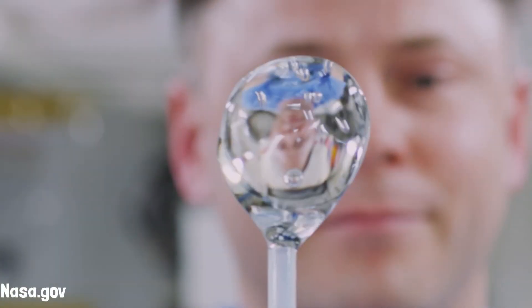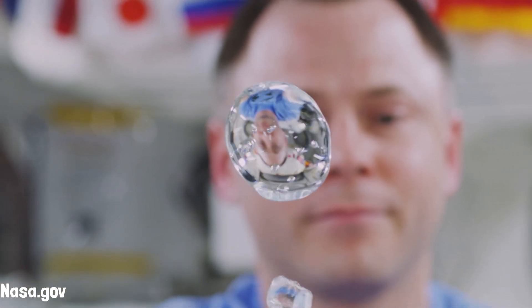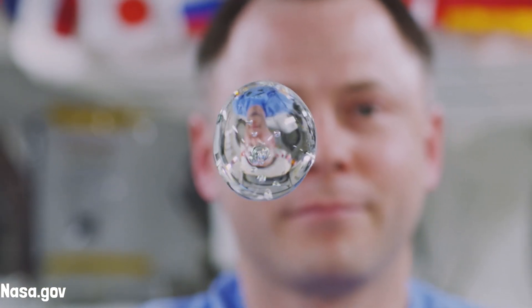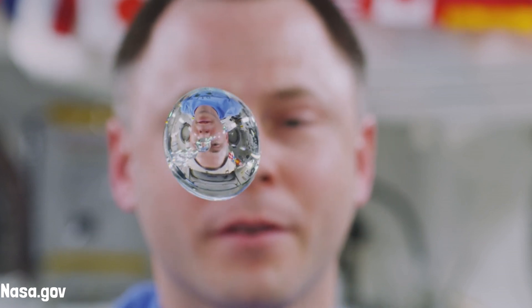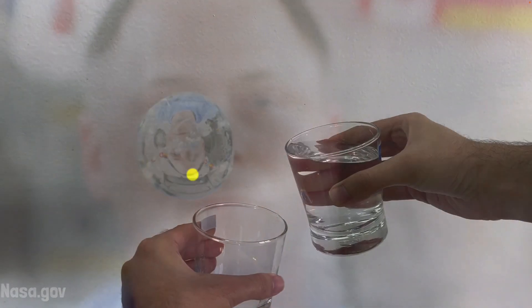In fact, here is NASA footage of water drops in orbit, where nothing is pressing up against them. What do you see? It's pretty much spherical. That's awesome, right? Onto the next question.